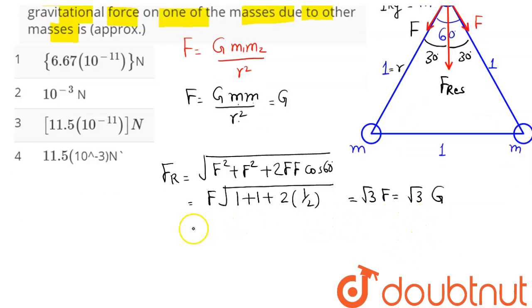So this on multiplication comes as 11.5 into 10 power minus 11 newton.